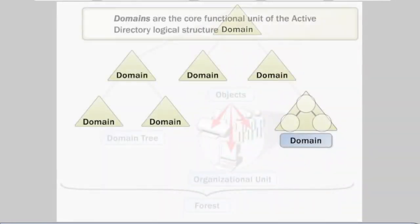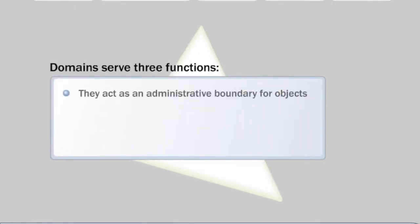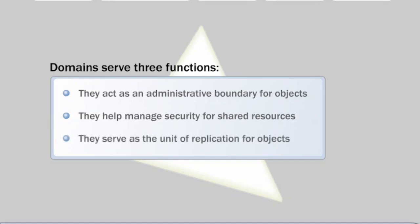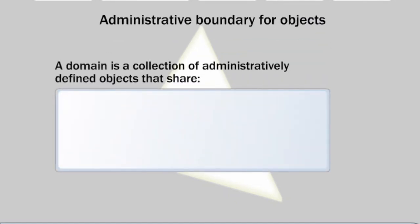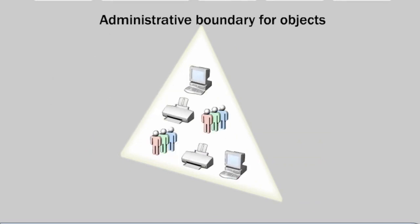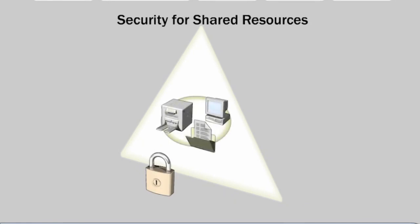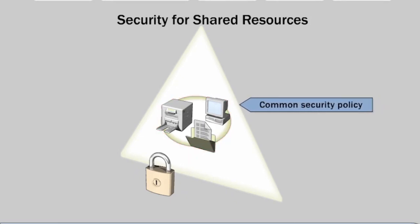Domains are the core functional units in the Active Directory logical structure. Domains serve three functions: they act as an administrative boundary for objects, they help manage security for shared resources, and they serve as a unit of replication for objects. A domain is a collection of administratively defined objects that share a common directory database, security policies, and trust relationships with other domains. It is common to place objects in the same domain if you want them to share a common security policy or be managed by the same systems administrator.